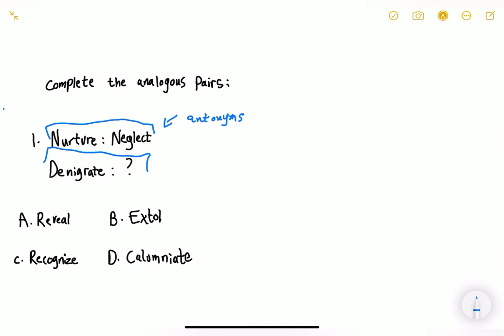First, what does denigrate mean? Denigrate means to criticize unfairly. So what's the opposite of criticize unfairly? Let's look at the definition. So reveal means to show something and that's not really the opposite because when you criticize unfairly, you reveal someone's maybe secrets or whatever. It's not recognize because when you criticize unfairly, you recognize someone's flaws.